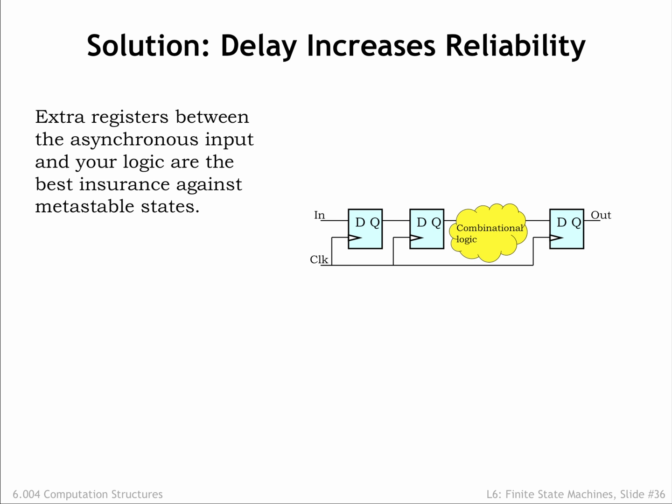It's only at the next clock edge, an entire clock period later, that the second D register will need a valid and stable input. There's still some probability that the first register will be metastable after an entire clock period, but we can make that probability as low as we wish by choosing a sufficiently long clock period. In other words, the output of the second register, which provides the signal used by the internal combinational logic, will be stable and valid with the probability of our choosing. Validity is not 100% guaranteed, but the failure times are measured in years or decades, so it's not an issue in practice.